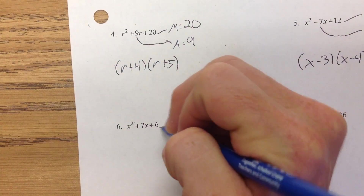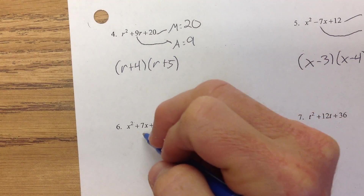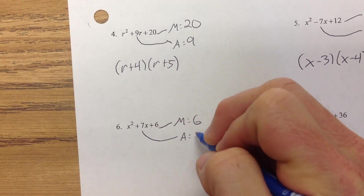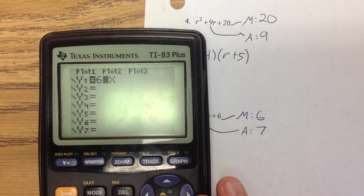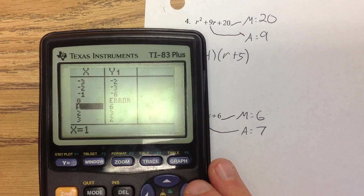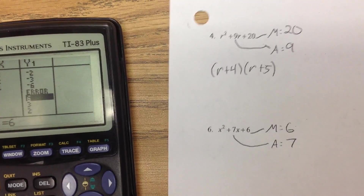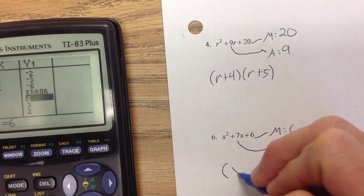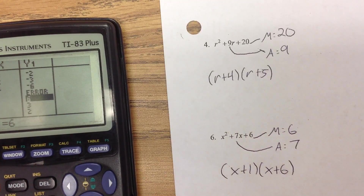On this next one, we're multiplying to a positive 6 and adding to a positive 7. If you need the calculator, don't hesitate — I'm going to be on the positive side because I have to add to a positive number. And right there, 1 and 6 — the very first choice. So x plus 1, x plus 6.